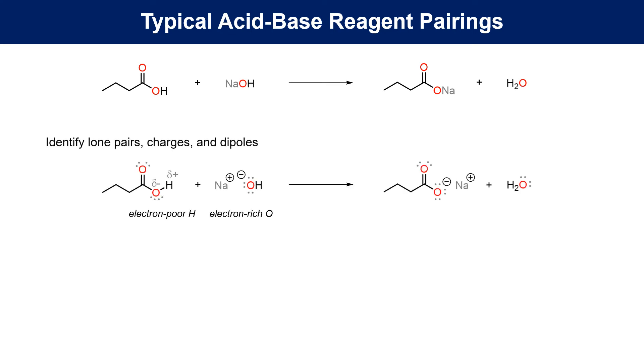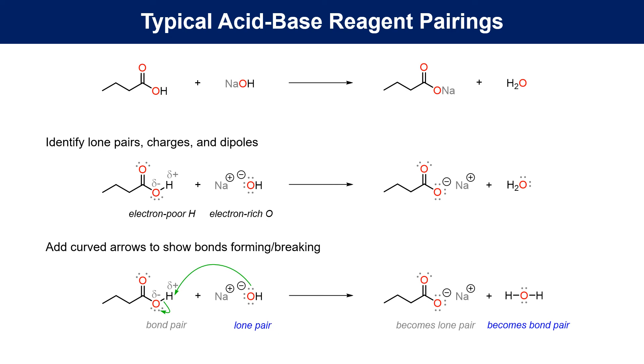Firstly, we need to identify dipoles and charges to work out which reactant is electron-rich and which is electron-poor. Here, the hydroxide anion is rich and the proton on the carboxylic acid is poor. Then we add the curved arrows to show the electron-rich base donating to the electron-poor proton and the conjugate base breaking off to complete the conversion.